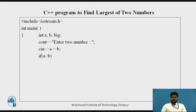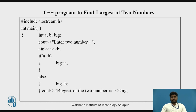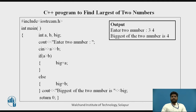Using an if statement: if a is greater than b, then big equals a; else big equals b. The final output prints the biggest of the two numbers. For example, if the user enters 3 and 4, the output is 'The biggest of the two numbers is 4'.